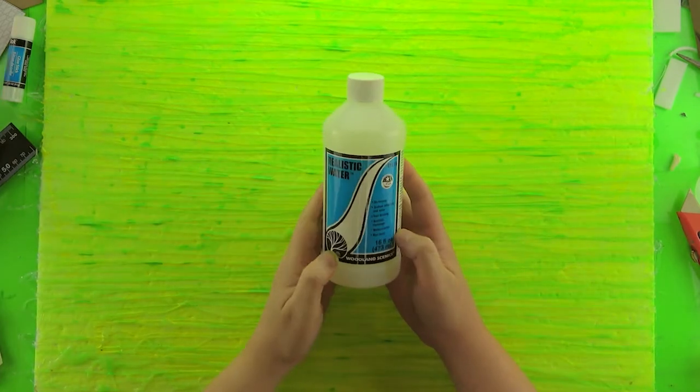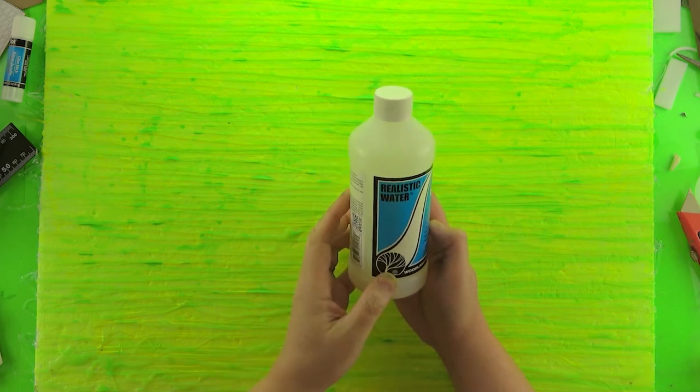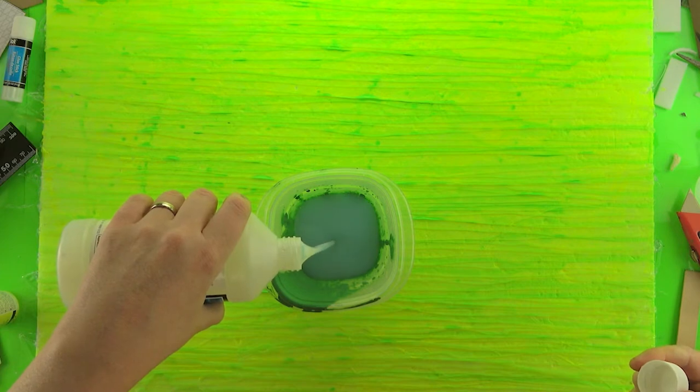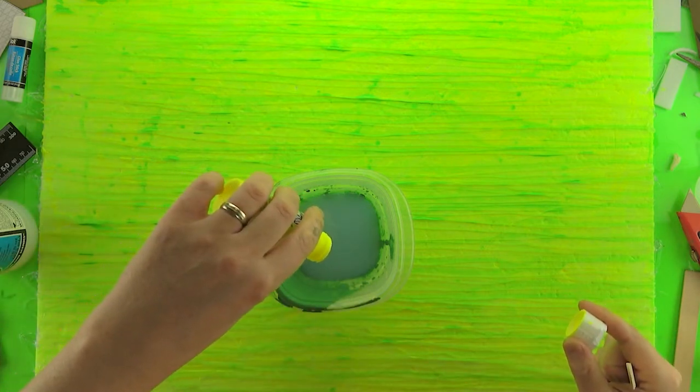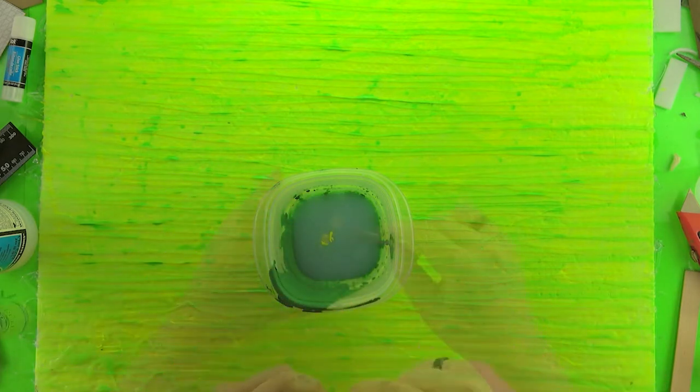And as a final touch I'm going to use realistic water. This is a great product, I'm not endorsed by them, but this is a really great product to add depth and glossiness to things. It's used on model railroad setups and dioramas to simulate water and we're going to do the same thing here.